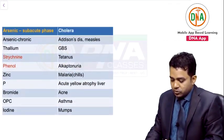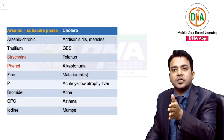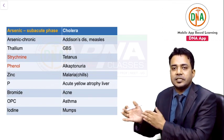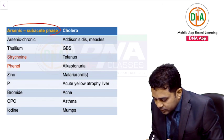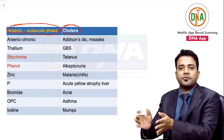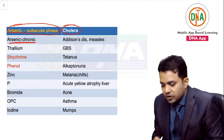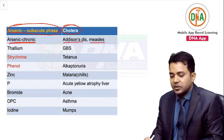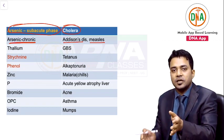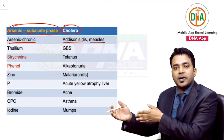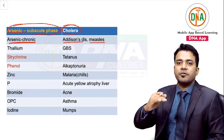Now let us come to the second last table: different poisoning events that simulate diseases. Subacute arsenic poisoning resembles cholera. Chronic phase of arsenic poisoning resembles Addison's disease and measles due to raindrop-like pigmentation. In Addison's disease, pigmentation is caused by increased levels of ACTH.